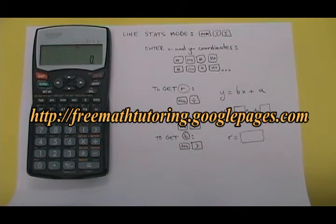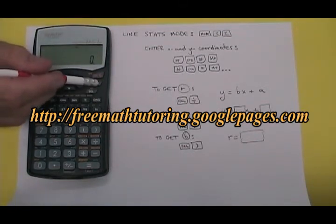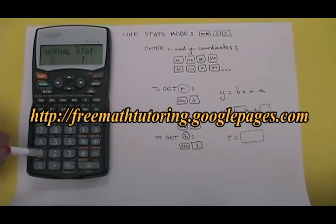The first thing you have to do is get into the mode for entering stats, but not just any stats, the x and y coordinates of points on a straight line stats. To get into line stats mode, you do mode 1 1. So I press the mode button, then I press 1 to choose stat, and then 1 to choose line.